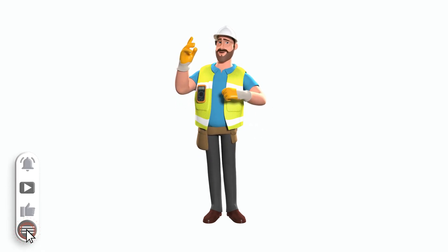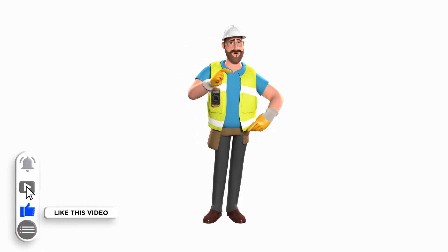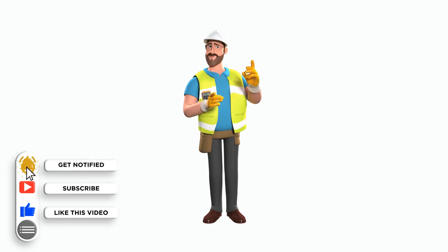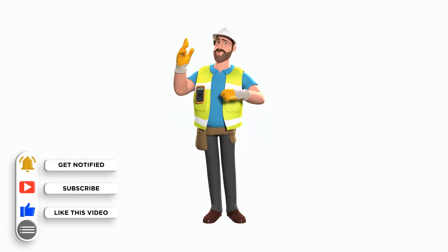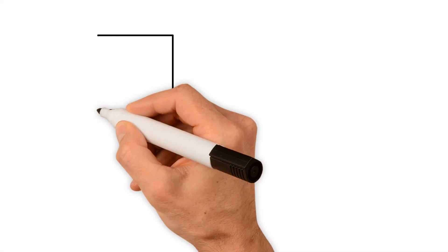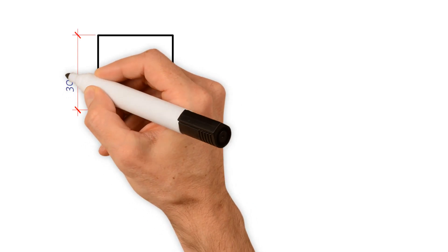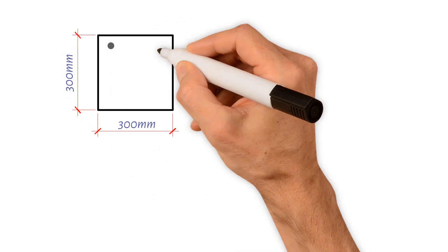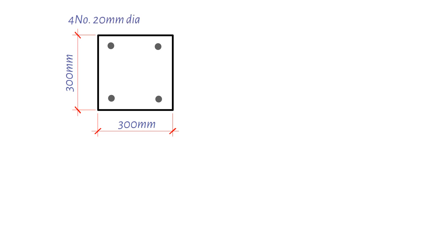Welcome back to the channel. In today's simple tutorial, we will explain how you can determine whether a reinforced concrete column cross-section of 300 millimeters by 300 millimeters with four 20-millimeter diameter reinforcing bars would be suitable to resist an axial load of 2,500 kilonewtons.